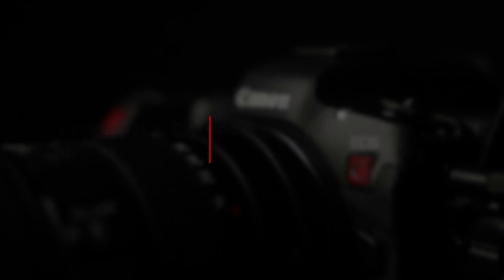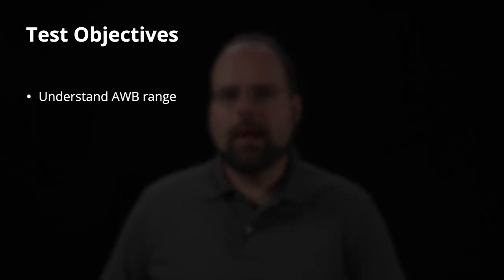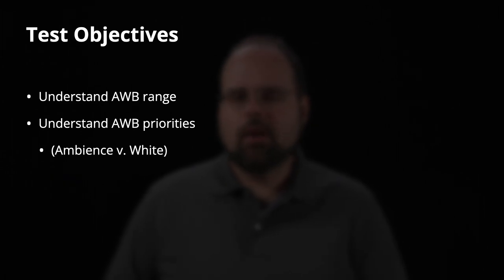So I had three primary objectives when it came to testing the auto white balance system on the R5C. First of all, I wanted to understand what auto white balance or what range of color temperatures auto white balance was designed to work over or at least worked over well. So on the R5 and Canon's other photo cameras, Canon actually publishes the range that they're designed to work in. That's something that is omitted from the manual on the R5C. So that was a big question of mine. Second of all, I wanted to understand or be sure of the auto white balance priorities. So again, on Canon's photo cameras, we now have ambience and white priority. Now, I assume that the R5C's white balance was going to be prioritizing neutrality or white, but I wanted to be certain about that as well.